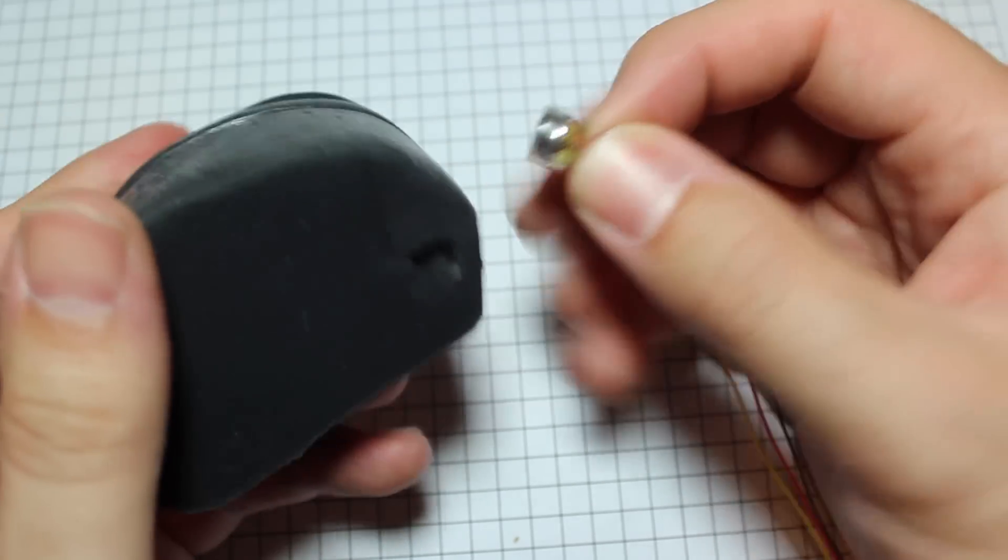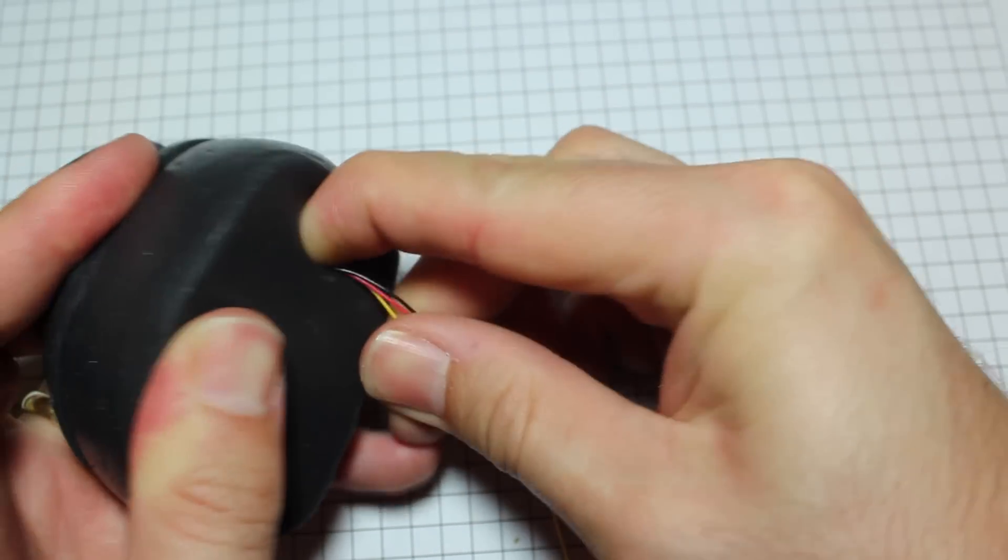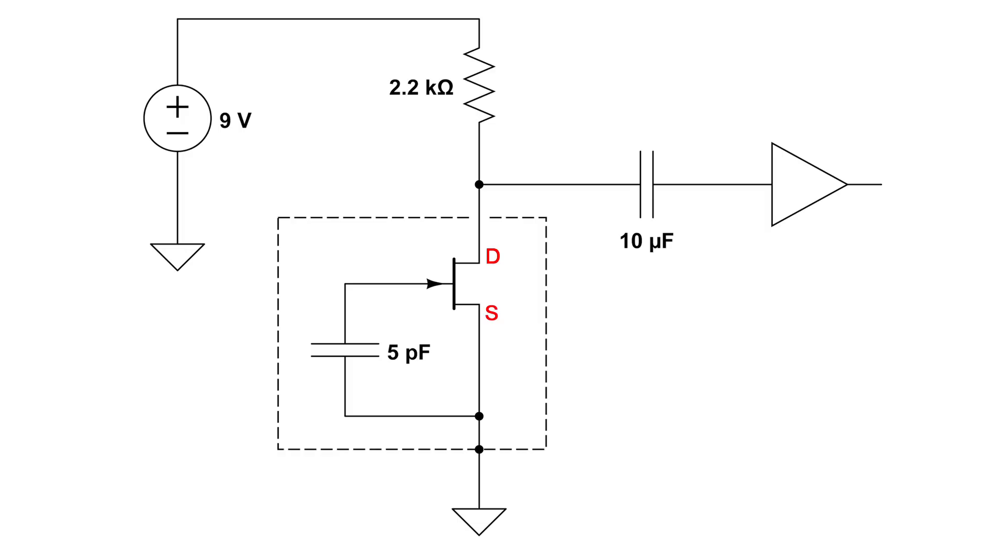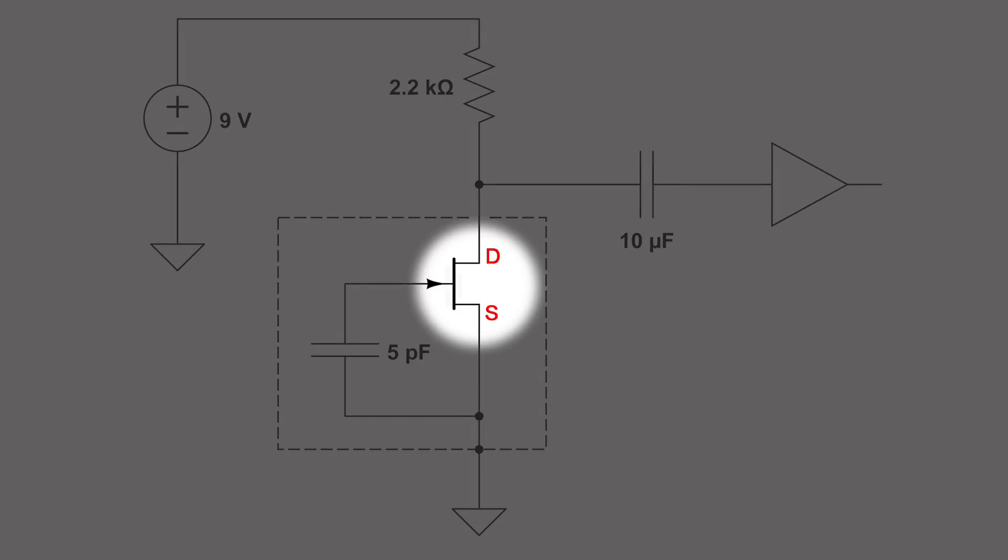I first ran into this distortion when I was experimenting with binaural dummy head mics that use this capsule. This distortion is not a mechanical limitation of the diaphragm, but amplifier distortion in the built-in FET that serves as a preamp.